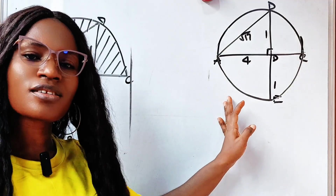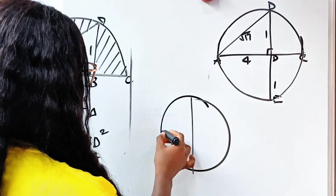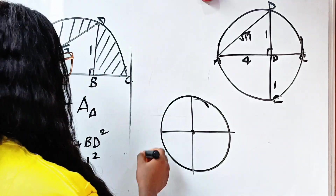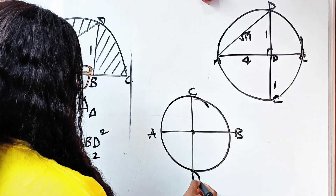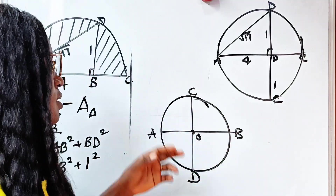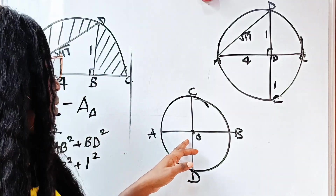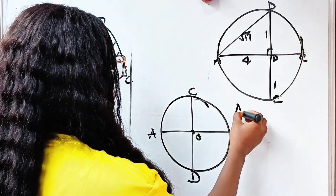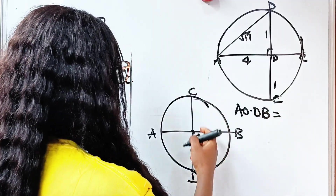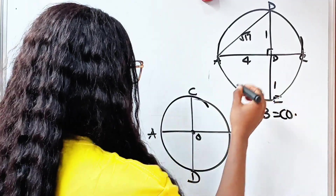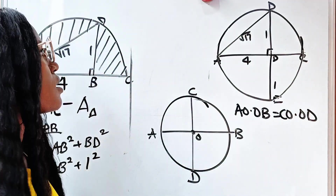According to the chord-chord power theorem: in a circle, if two chords intersect at a point — let's call them chord AB and chord CD with intersection point O — then AO multiplied by OB equals CO multiplied by OD. That is what the chord-chord power theorem states.